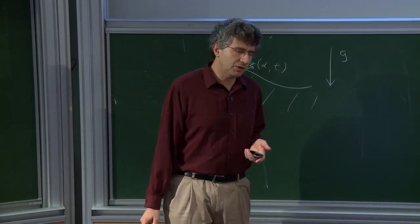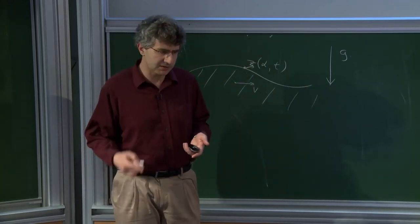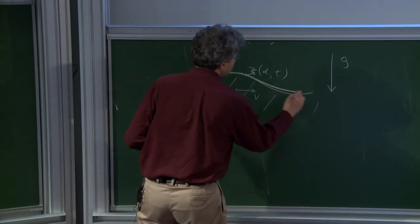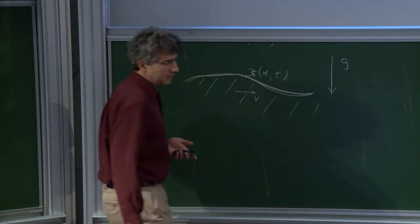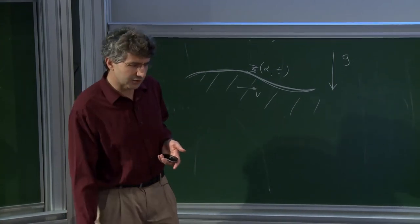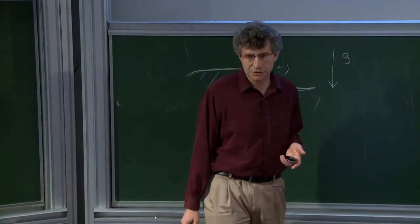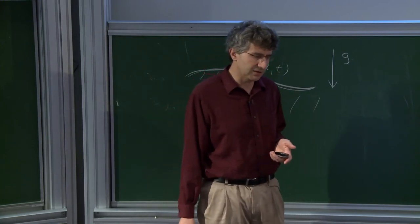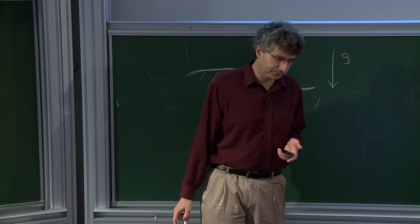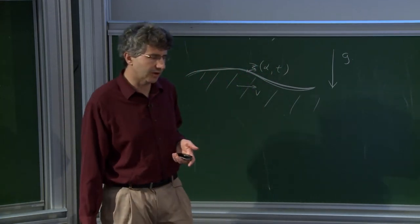One can write this simply as saying that D_T Z minus the velocity V would have to be tangent to the graph of the interface. To close the system, we need to prescribe the pressure on the interface, proportional to the mean curvature: P of X and T equals sigma times kappa of X and T, where kappa is the mean curvature and sigma is a positive parameter.